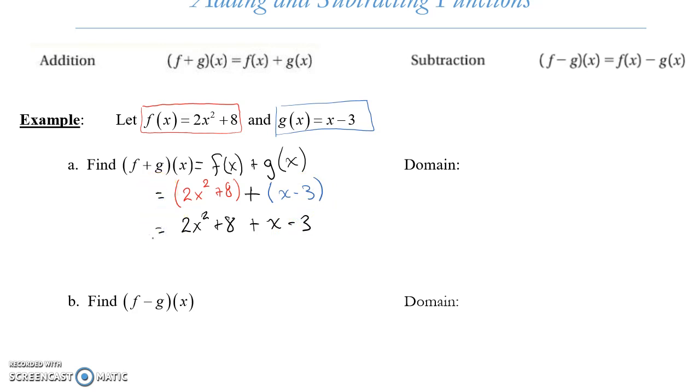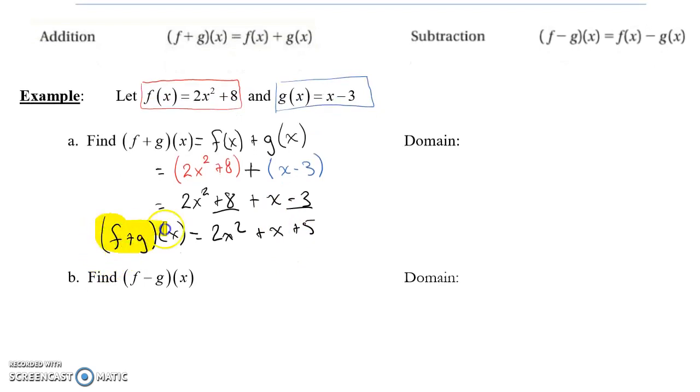Now, like terms. Combine your like terms, and we're good to go. So make sure you write your function in standard form. So I could write that f plus g of x is equal to 2x squared plus x, and then plus 8 and minus 3 are like terms. When I combine these functions through addition, I get a quadratic trinomial.